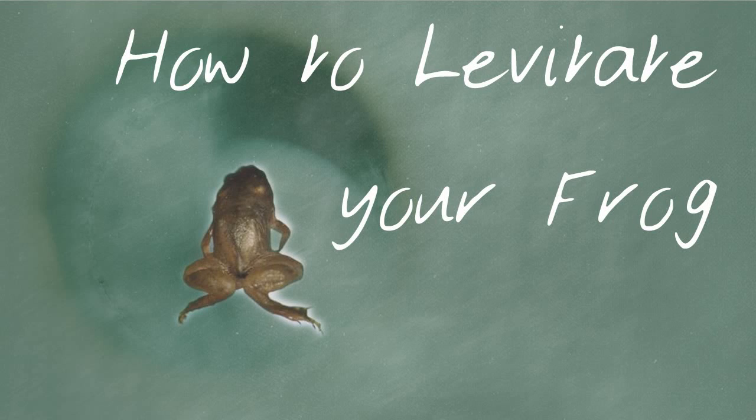This frog is levitating because there's iron in its blood and is in a really strong magnetic field. That magnetic field is made by using an electromagnet, which is a coil of current-carrying wire. This video is going to tell you everything you need to know about how a magnetic field is formed around a current-carrying wire.